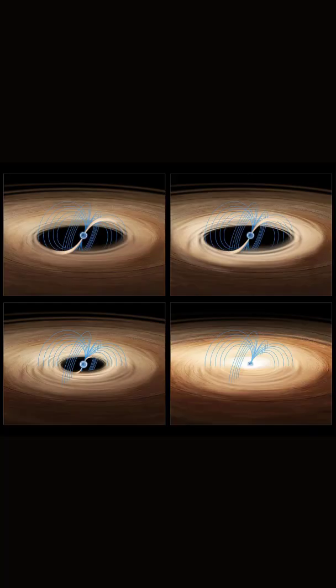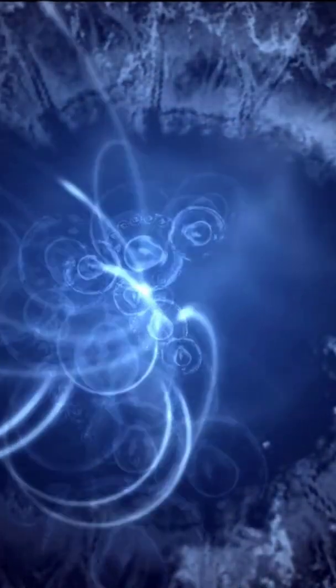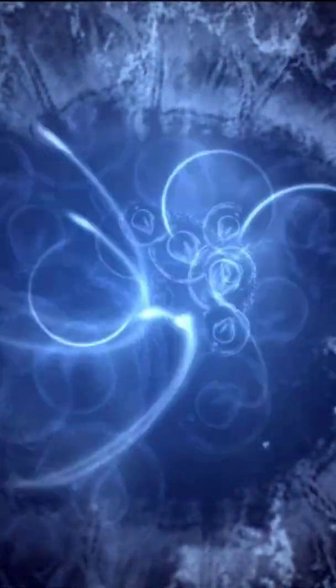The gravity on the surface of a neutron star is so intense that it distorts the space around it, causing the star to emit intense radiation, including X-rays and gamma rays.